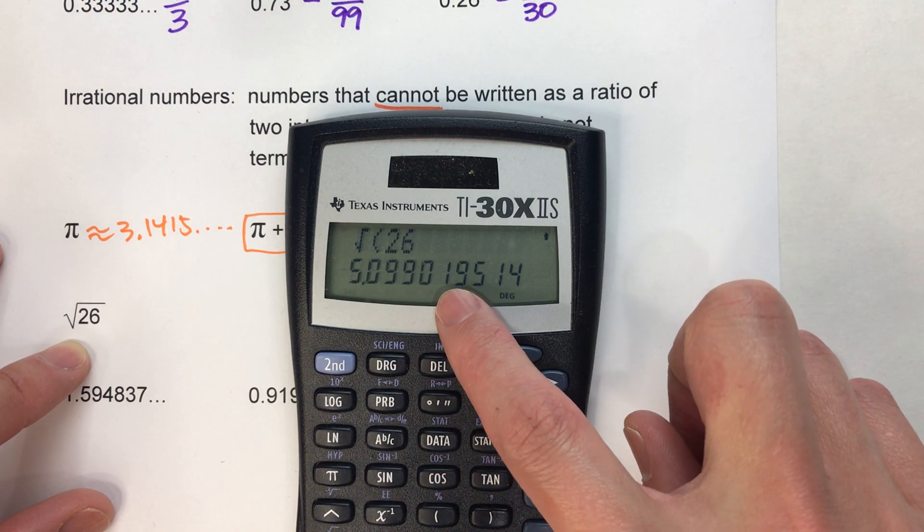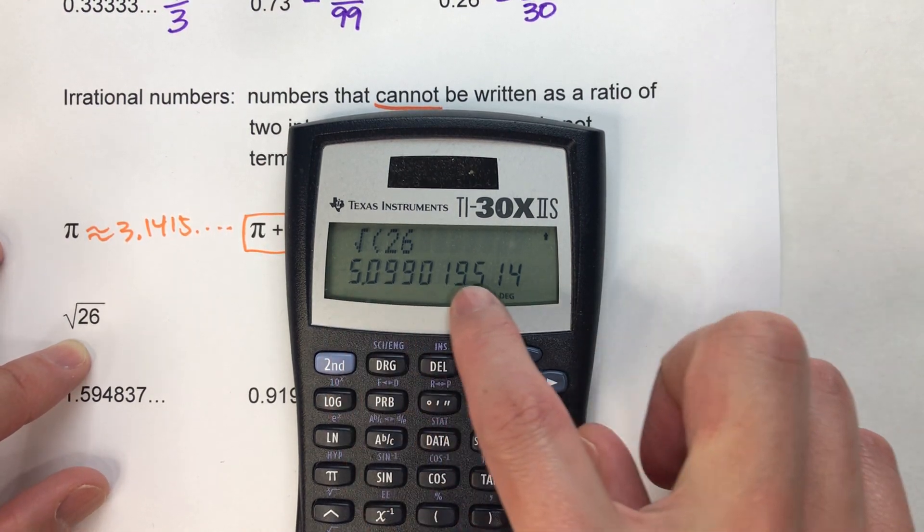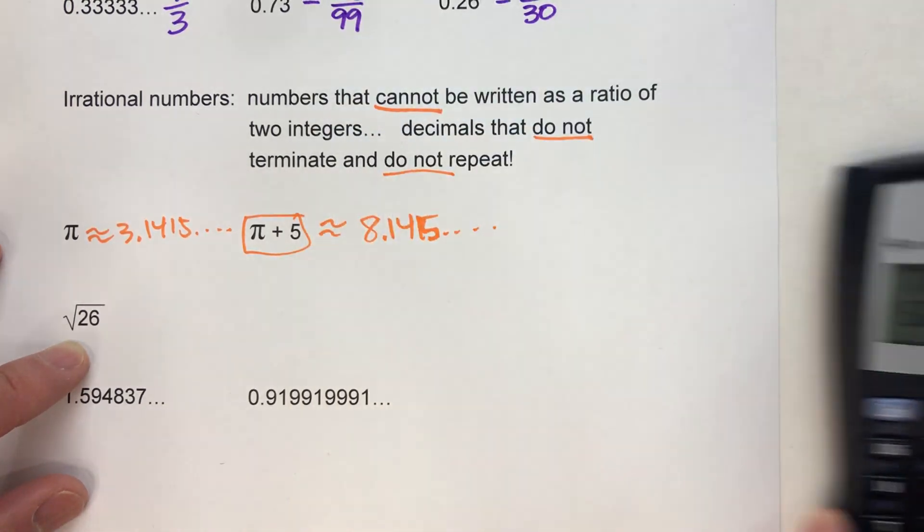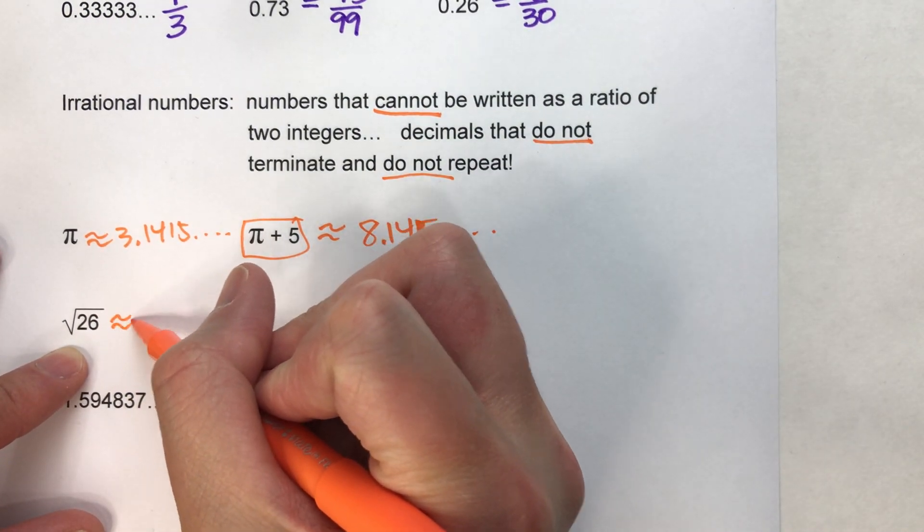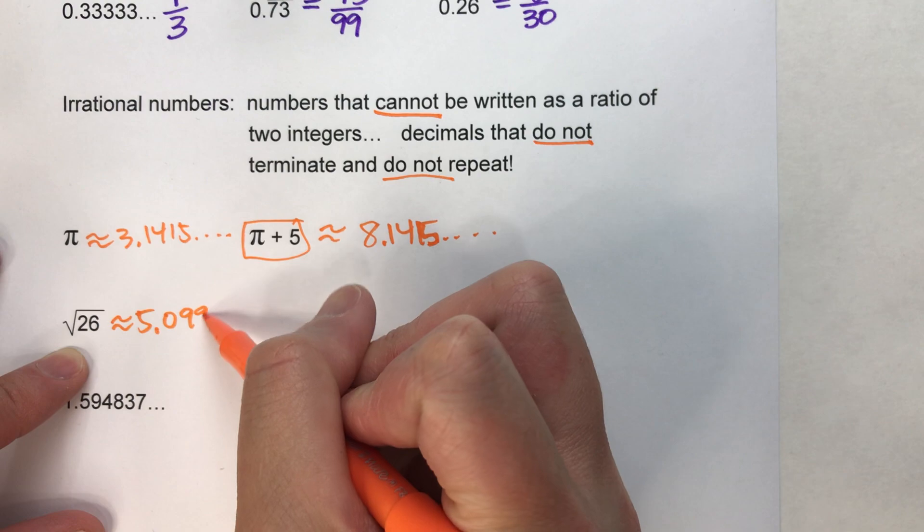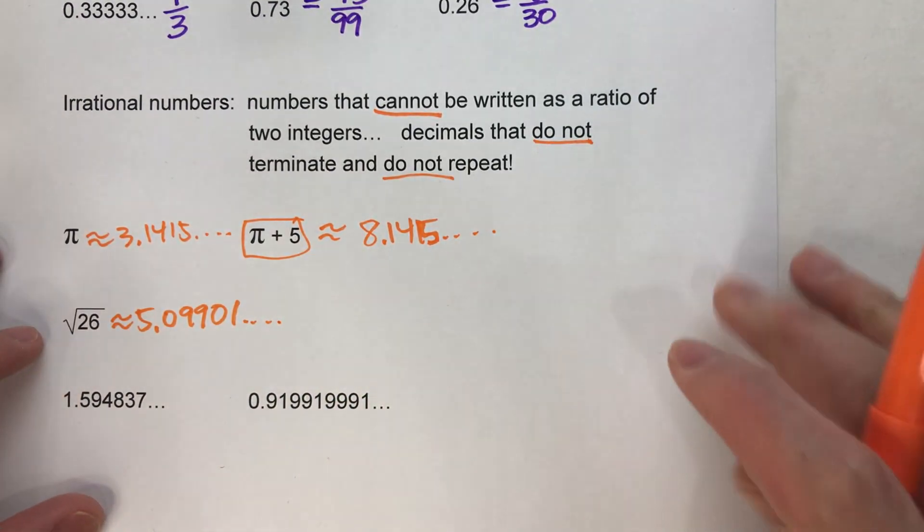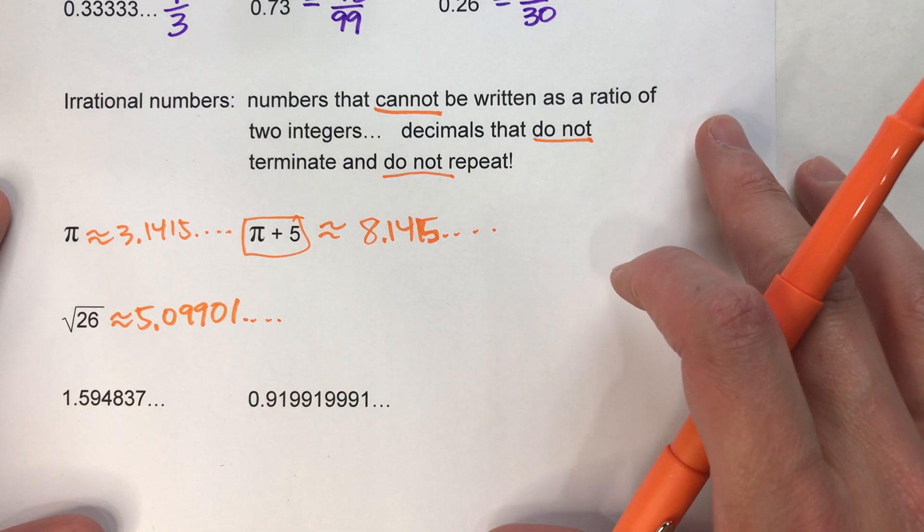5.099019514... this keeps going forever. Notice there's no repeating pattern to this. It's about 5.0990122... irrational.